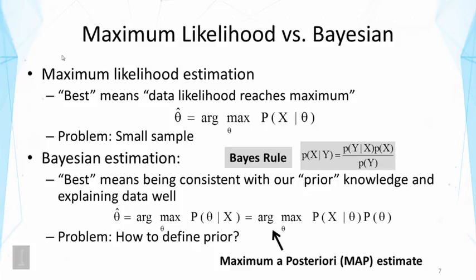This estimate intuitively makes sense and is often very useful. It fixes the parameters that best explain the data. However, it has a problem when the data is too small, because when there are very few data points, if we trust the data entirely and try to fit it, we will be biased.